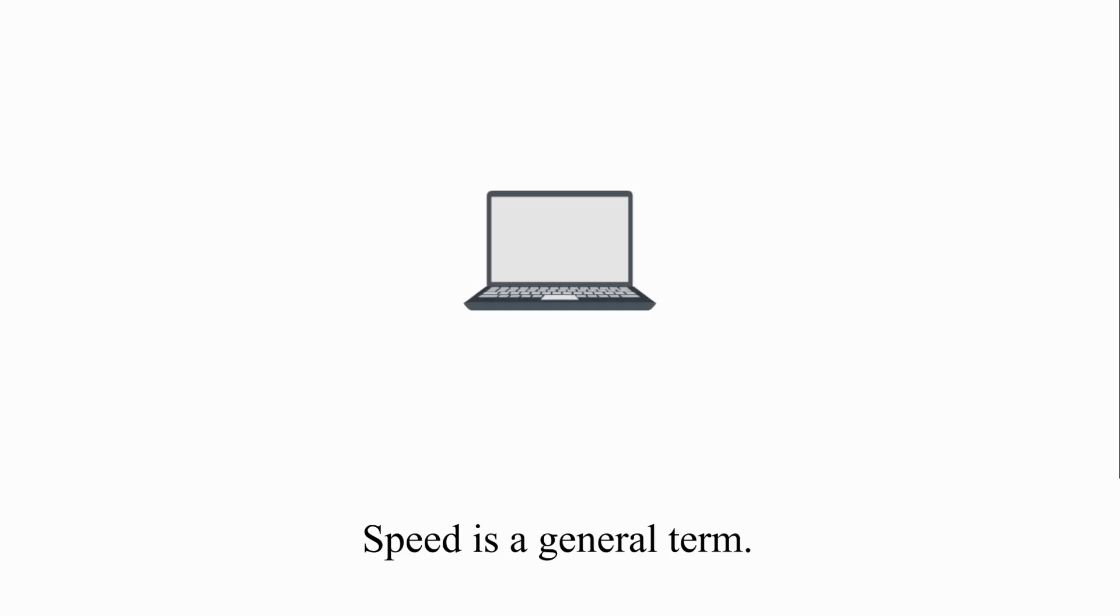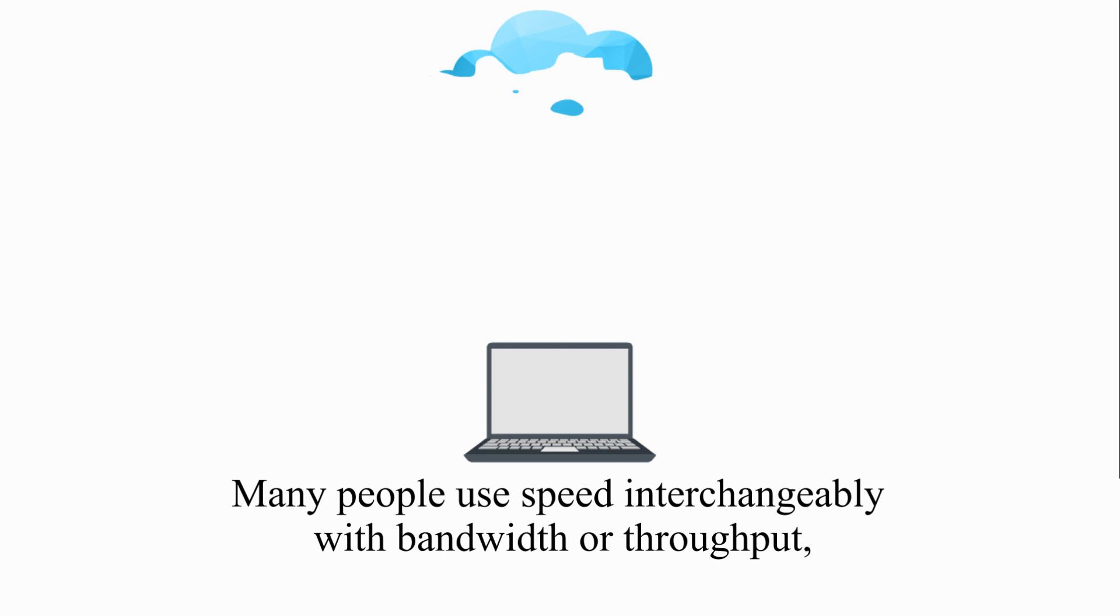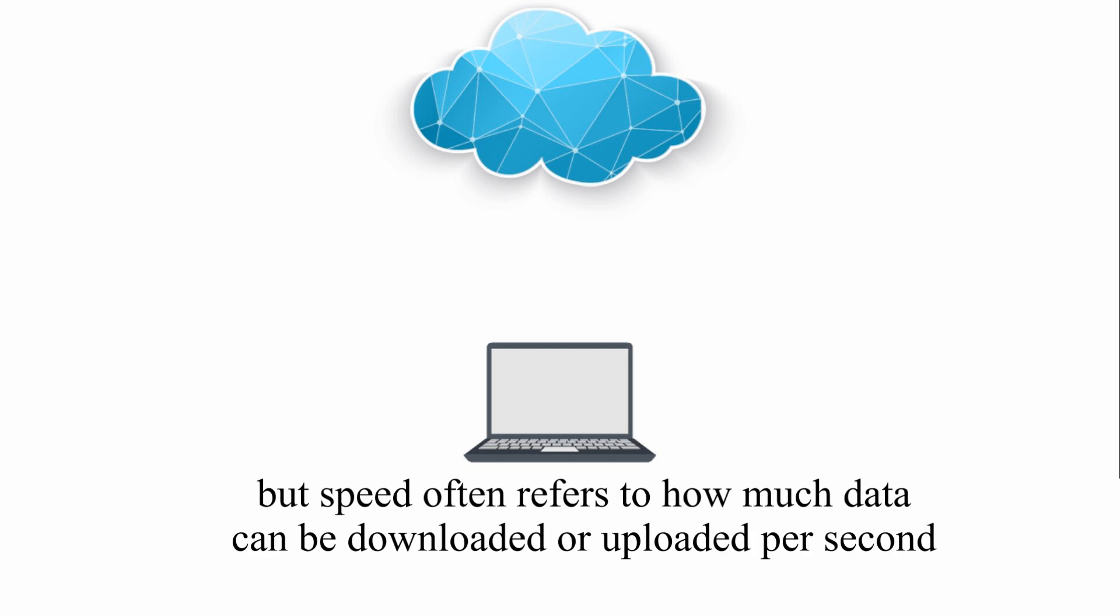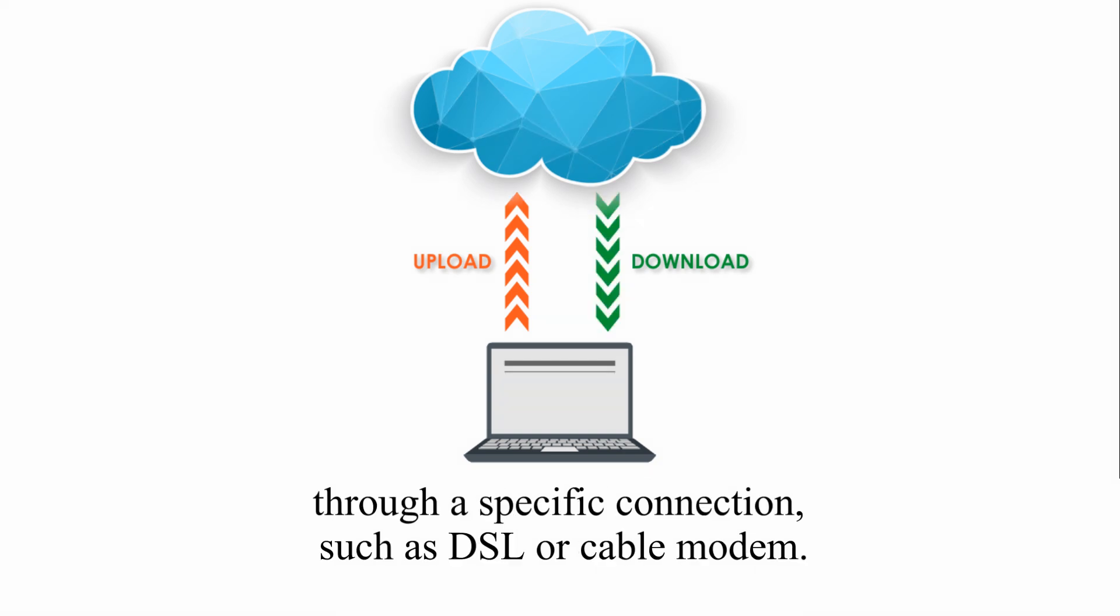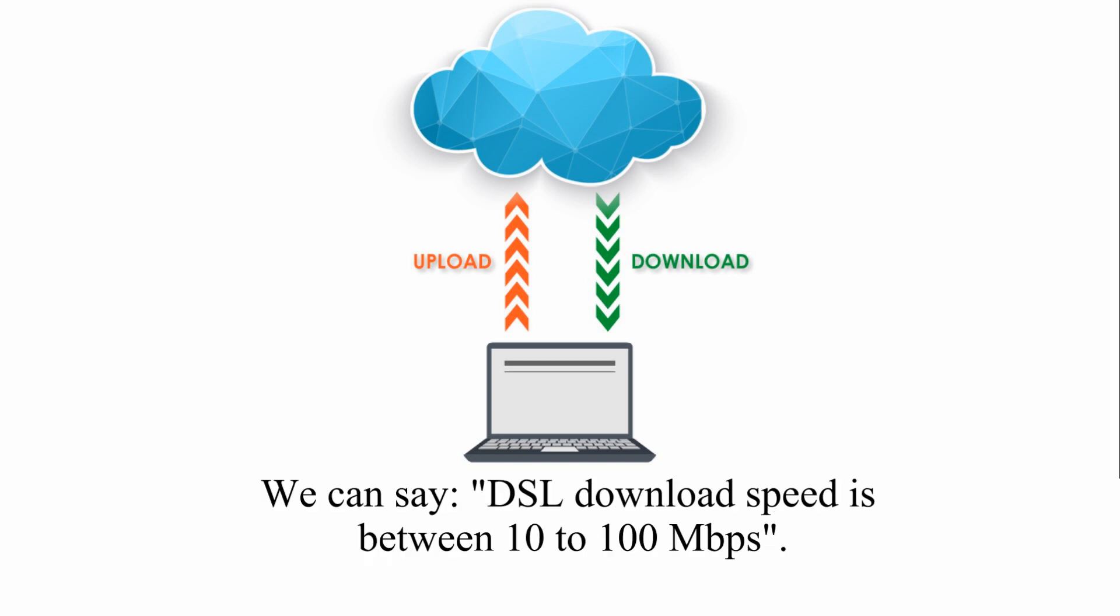Speed is a general term. Many people use speed interchangeably with bandwidth or throughput. But speed often refers to how much data can be downloaded or uploaded per second through a specific connection, such as DSL or cable modem. We can say DSL download speed is between 10 to 100 Mbps.